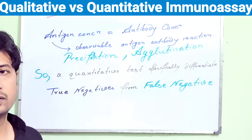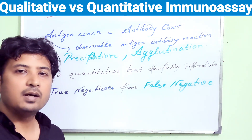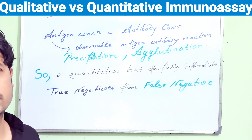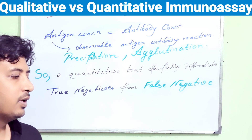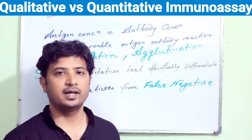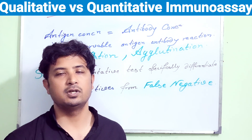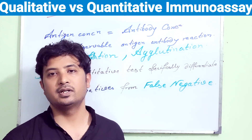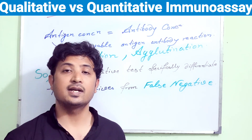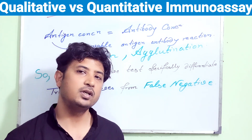That is why a quantitative immunoassay is much more methodical, practical, and approachable — it can differentiate true negatives from false negatives. Qualitative tests cannot separate them. Now, from where did the concept come that antigen and antibody concentrations must be equal to produce an observable reaction? Here comes an interesting theory — the Marrex lattice hypothesis — which explains what happens when antigen is in excess, when antibody is in excess, and when both are equal. We will see that in the next class.